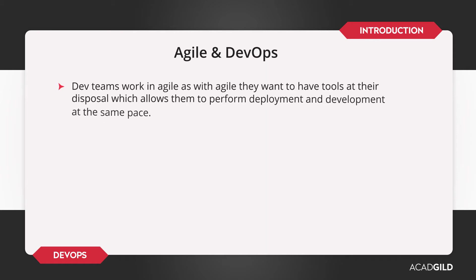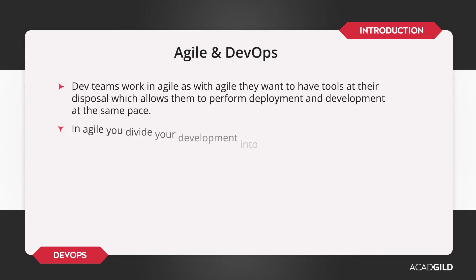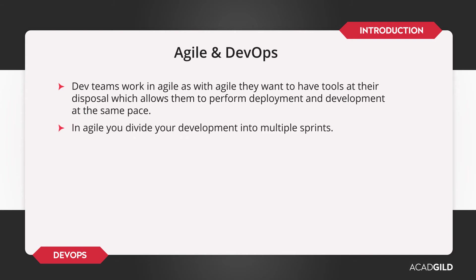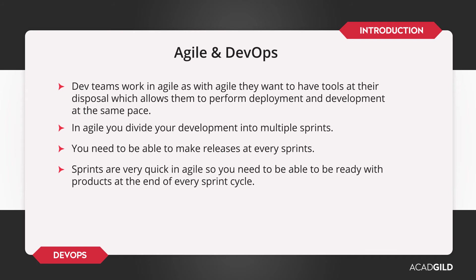Now, the development team works in Agile and is looking for tools that enable them to deploy and develop at the same pace as development. The Agile model lets you define development into multiple sprints. Similarly, you should be able to release at the end of each sprint. Sprints are very quick in Agile, and hence the product is ready in two or three weeks of time.